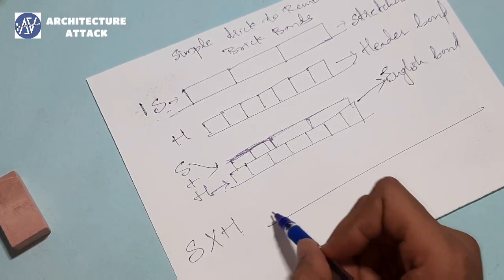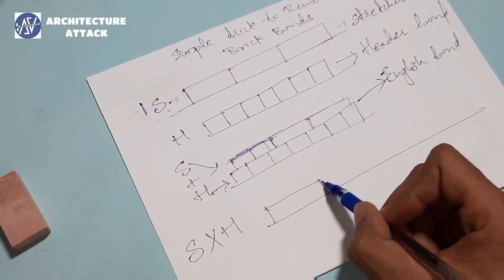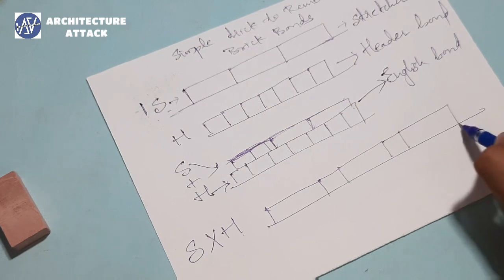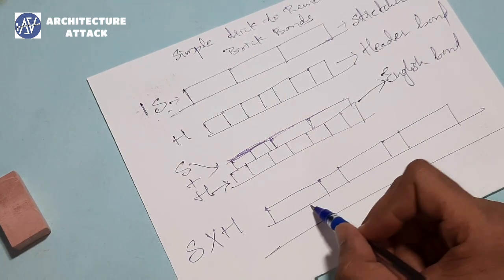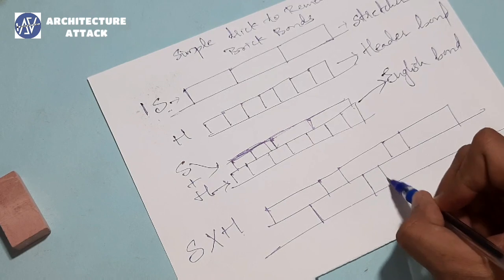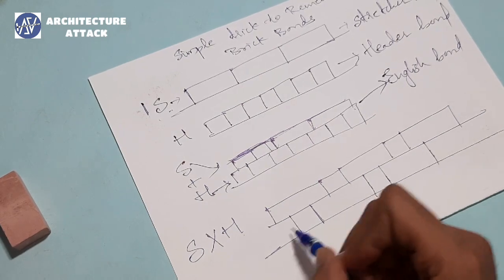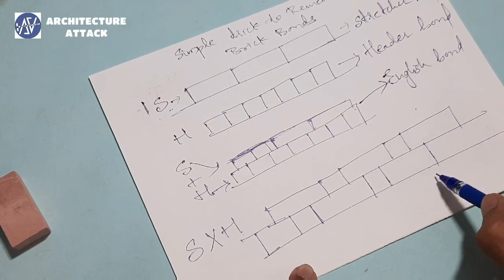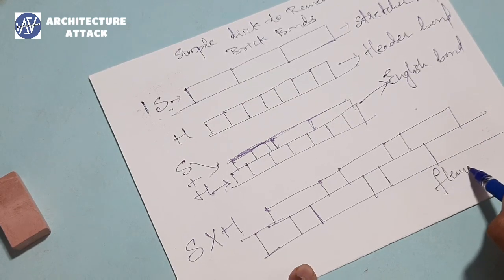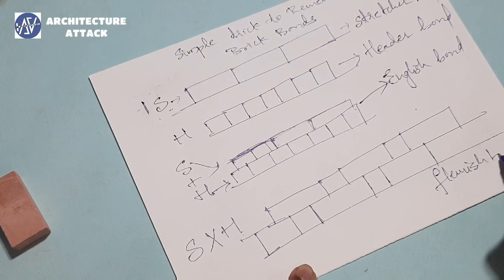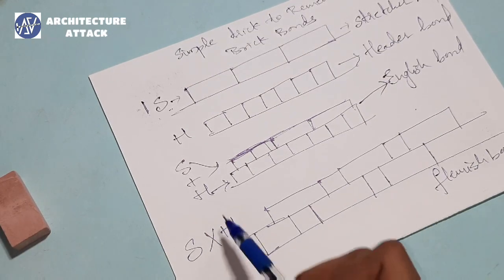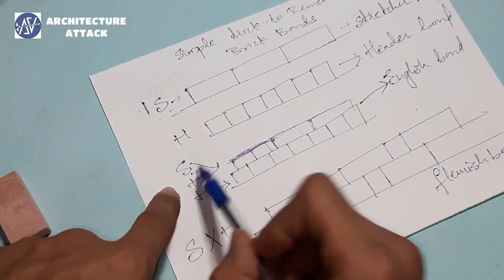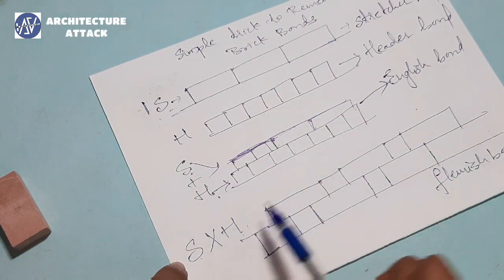And if we multiply — S into H — like in the same layer we are seeing one stretcher and one header alternating, and the other layer also has the same stretcher-header pattern, then this is called Flemish bond. So: stretcher bond, header bond, S plus H is English bond, S into H is Flemish bond.